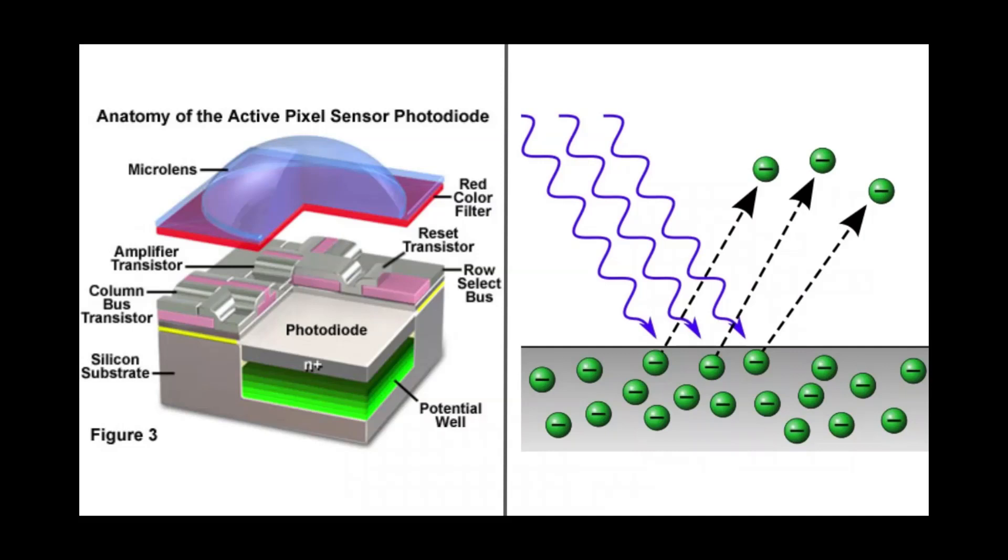Inside the photodiode, a process known as the photoelectric effect occurs. To understand the photoelectric effect, we first need to look at the structure of light. Light is really the flow of photons. You can think of a photon as a tiny little water balloon of energy.